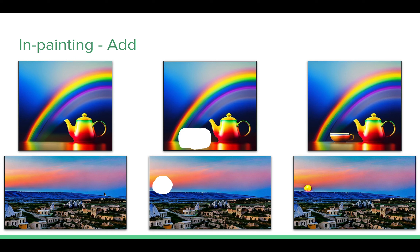Similarly, for an image we created in the last slide, we want to add a rising sun. We create a mask where we want to show the rising sun, then add 'a rising sun' to the prompt along with the original prompt, and it generates an image with a rising sun. This way, we can use in-painting to replace, add, or remove objects from an image.